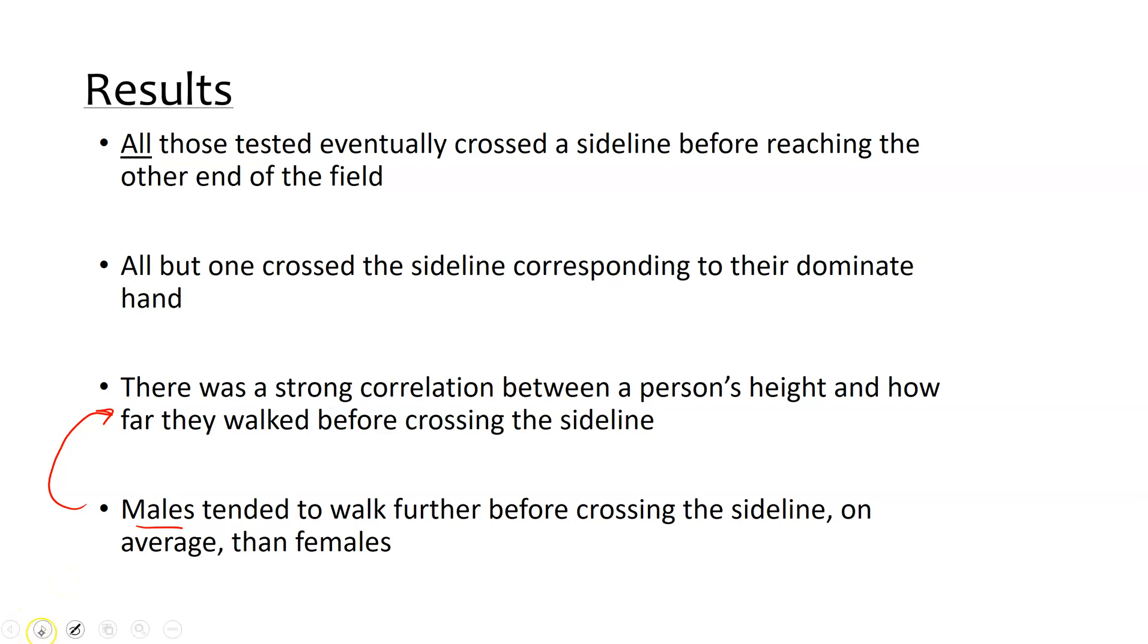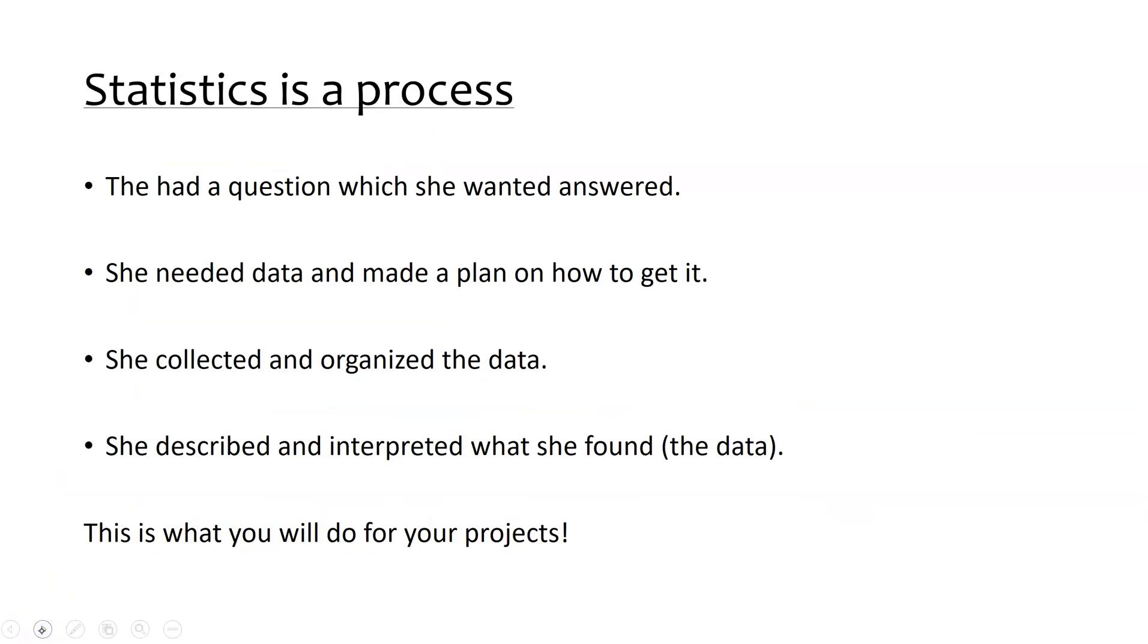So this was all of the information that they found. So to kind of go back to our statistical process: her population really were all students at her high school. She collected a sample of 32 students, and in this example students were the cases or those individuals. She had a research question, and then she designed a study in order to answer some of these research questions. It sounded like maybe she even had more than one. So she had a question she wanted to answer, she needed data and made a plan on how to get it, right? She collected data and organized that data, and then described and interpreted what she found.